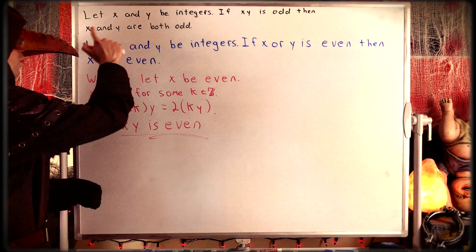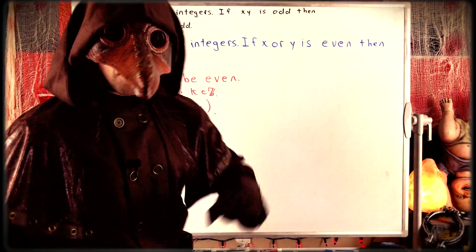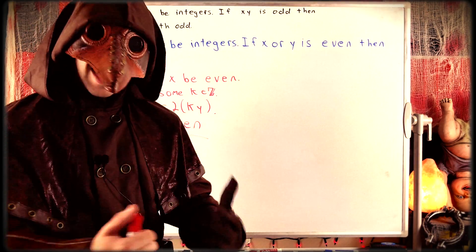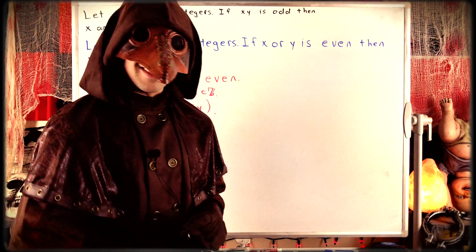So again, if we've got two integers, x and y, and their product is odd, then both of the integers must be odd as well. That's how we prove the statement using the contrapositive.